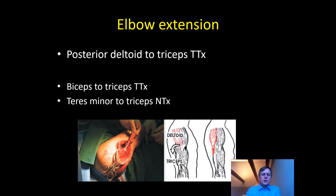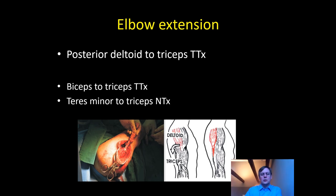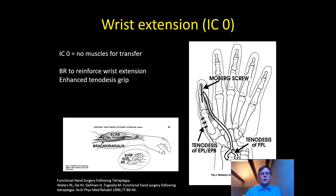For elbow extension, the deltoid to triceps transfer involves taking the posterior third of deltoid using fascia lata or tibialis anterior grafts to reach the triceps tendon. It's quite a prolonged rehabilitation programme — historically three months, although the Swedes have shortened that to six weeks. The alternative is biceps to triceps, and there is also a nerve transfer — teres minor to triceps. Once elbow extension is restored, you can then look at grip reconstruction. If there are only wrist extensors and you've got brachioradialis but no wrist extensors, you can transfer that in to provide a wrist extensor and then tighten the flexors to provide an enhanced tenodesis.